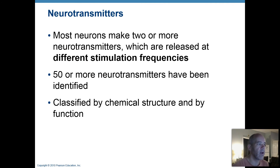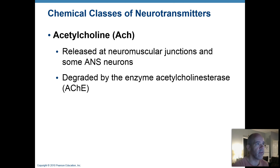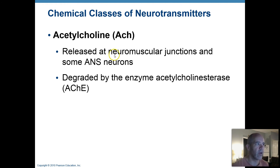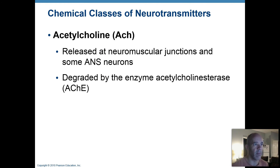We may not even know the identities of all neurotransmitters yet. In the human body, 50 or more have been identified, and they can be classified by their chemical structures and functions. Acetylcholine is often a class by itself — the one we learned about with the muscular system, secreted by motor neurons to signal muscle fibers. We'll also see in the autonomic nervous system that acetylcholine is produced there too, but with very different functions.